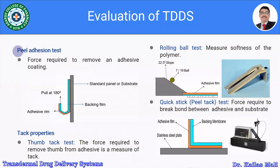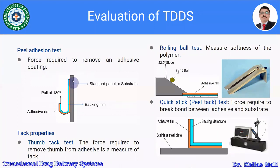In the peel adhesion test, the force required to remove an adhesive coating is determined. The apparatus comprises a standard panel or substrate with a backing film and adhesive layer; the adhesive is pulled at a 180-degree angle.